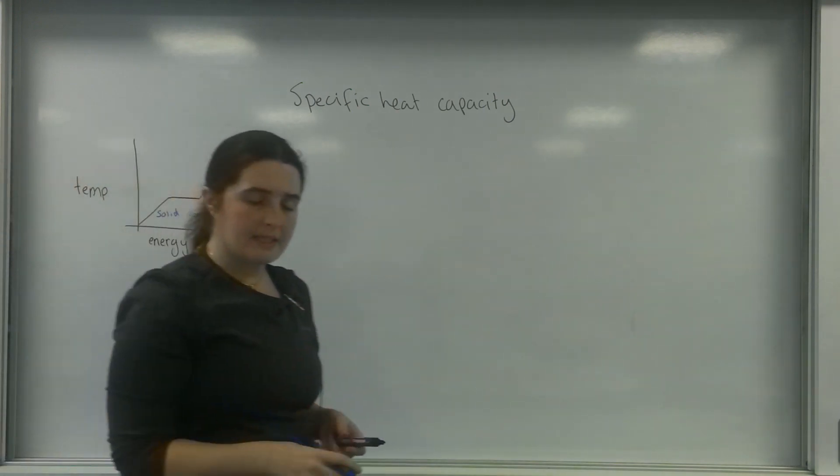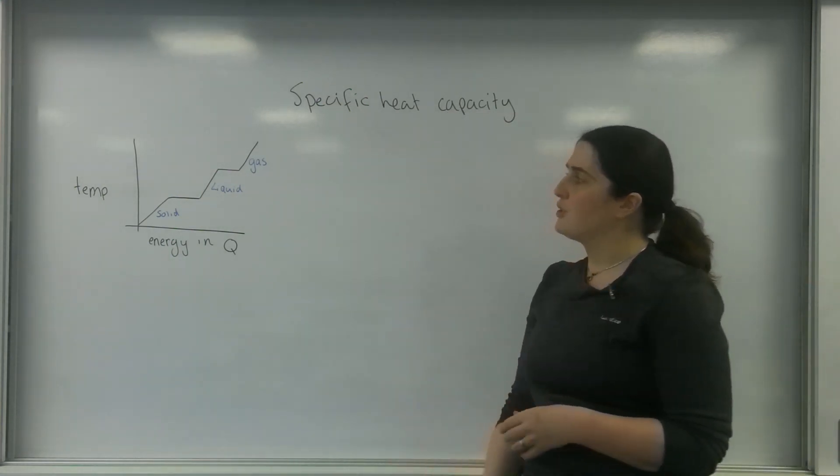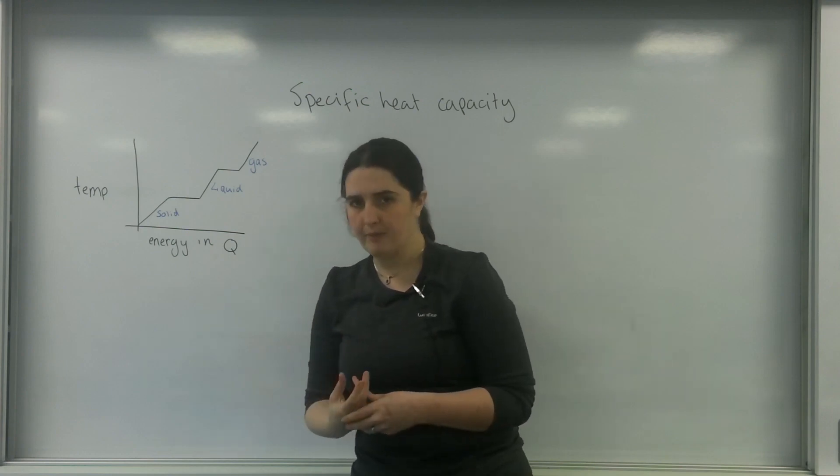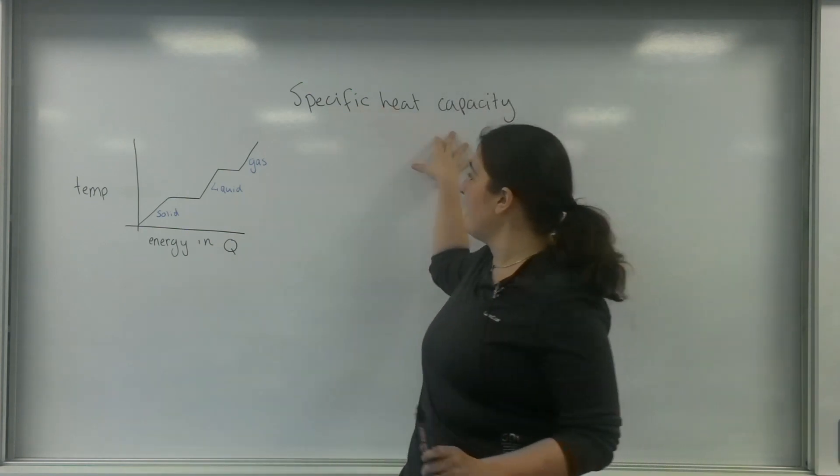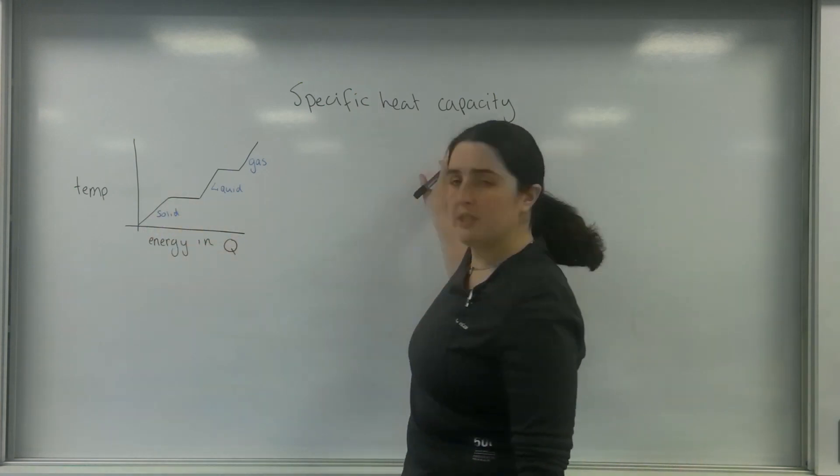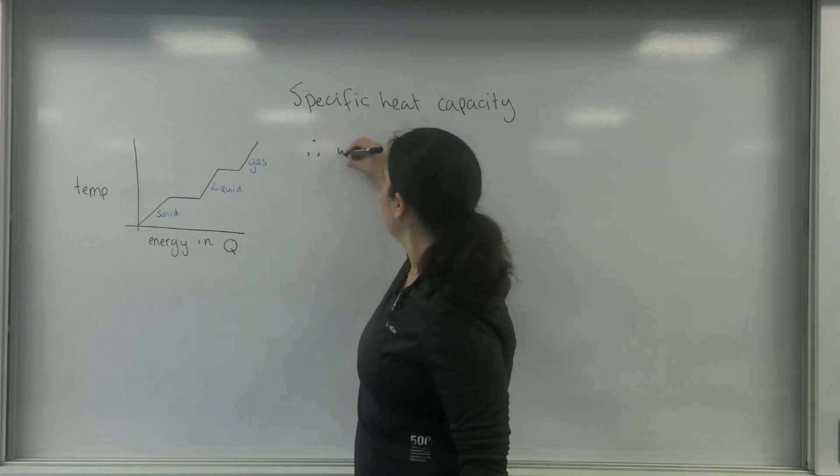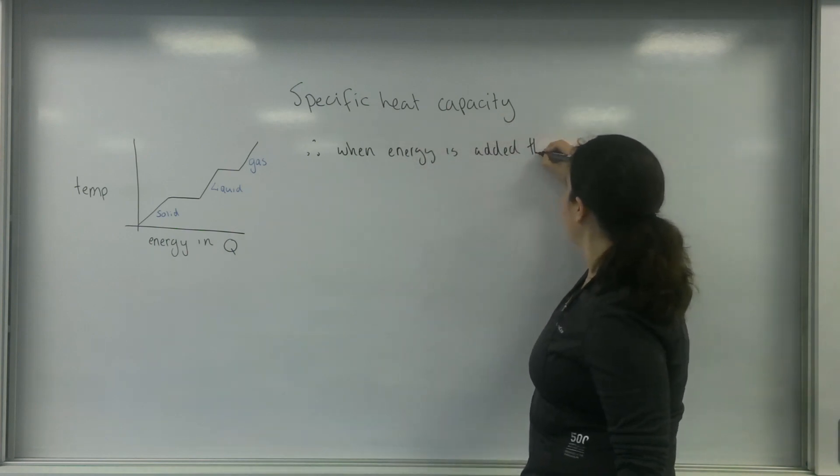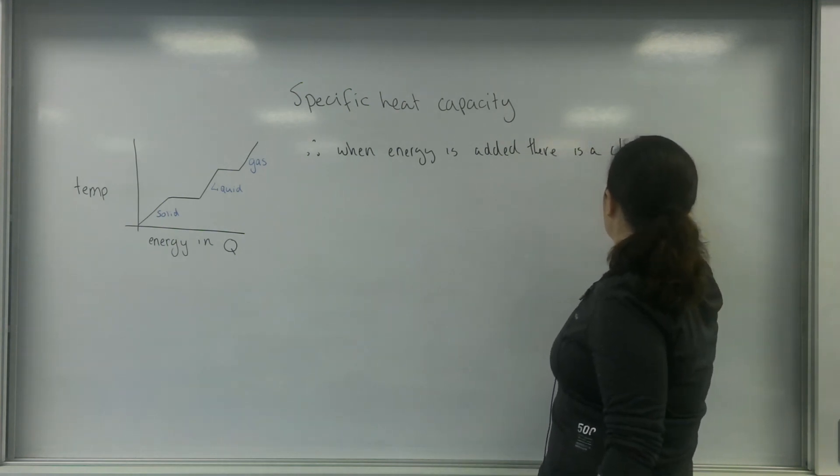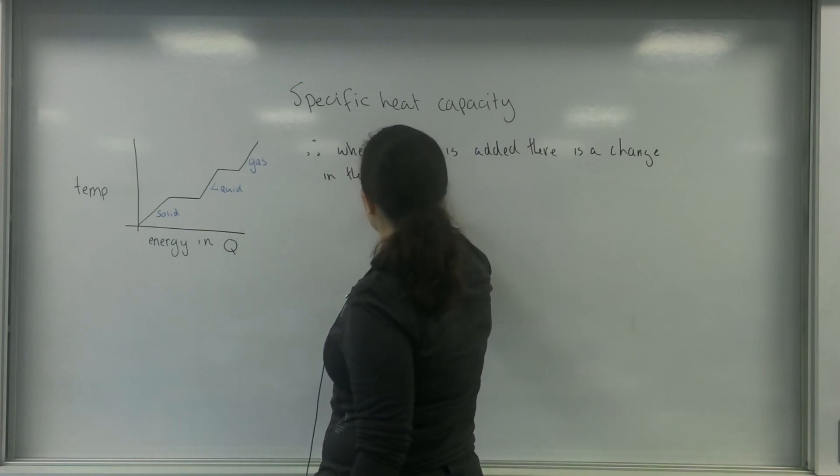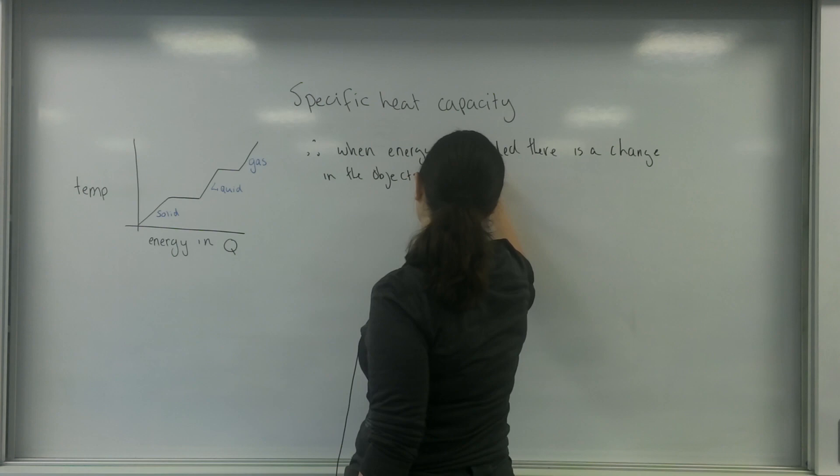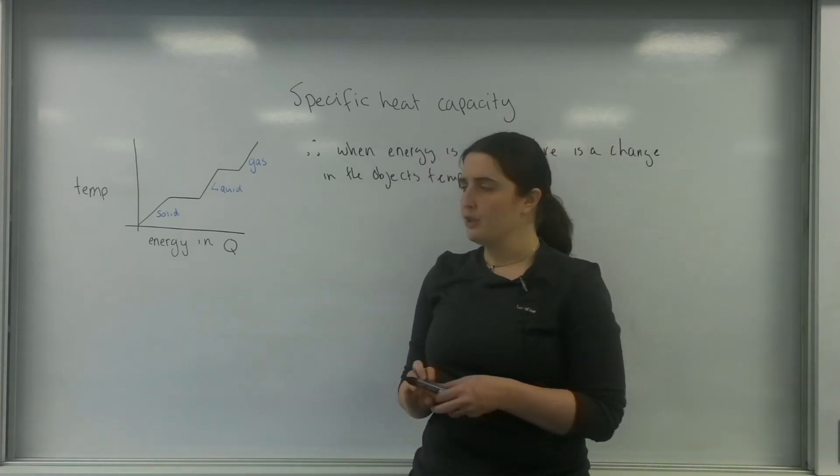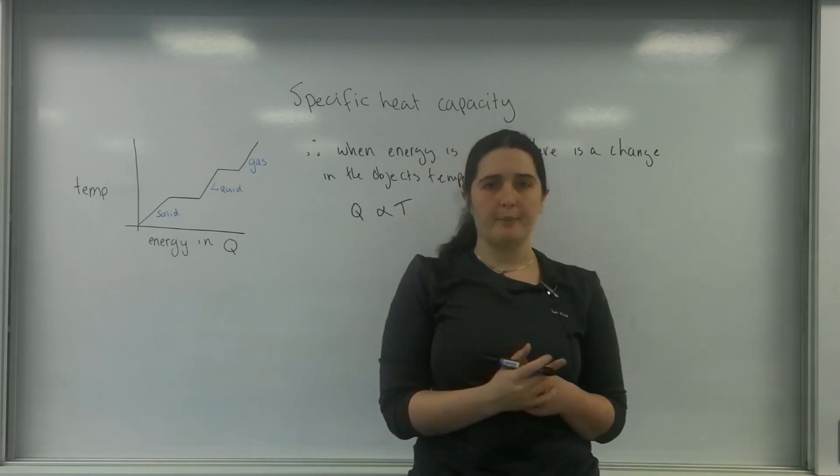Of course, after that you get into plasmas, etc. But there are two very distinct regions on that graph. There's this part where the temperature is going up, and this part where the temperature isn't changing but the state's changing. This is a linear relationship, so the energy is proportional to the temperature.